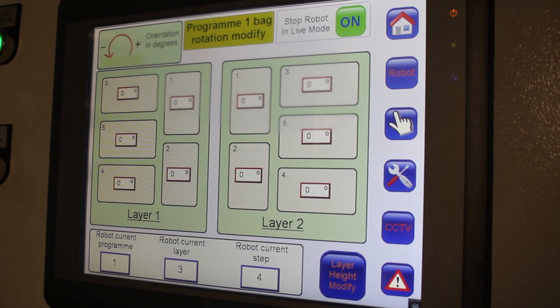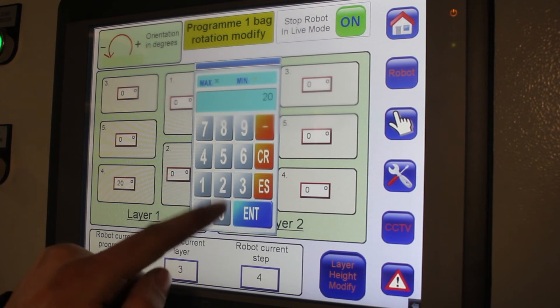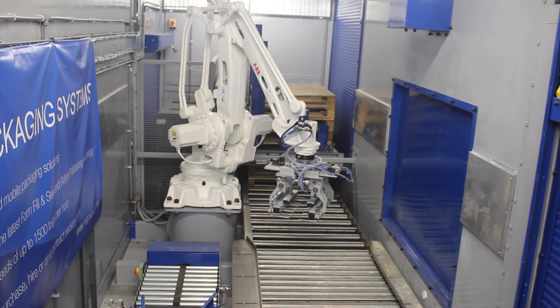Again then current layer, current step. What you do then is you look at that, look at which one you're on. Again there, you're going to change the degrees of the robot head and the robot will turn.